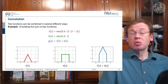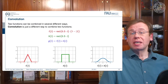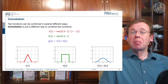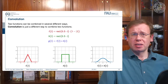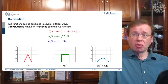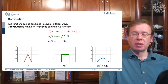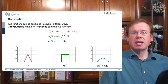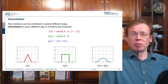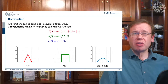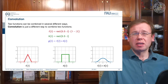We want to use a new concept of combining two functions. Convolution is a different trick — we also combine two functions, but the output is quite different from what you know with multiplication and addition. If we convolve the two functions with each other, we get a bell-shaped curve here on the right-hand side. So let's have a look at how this is actually computed.